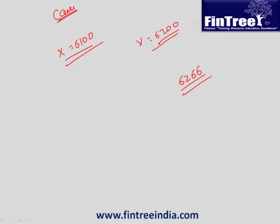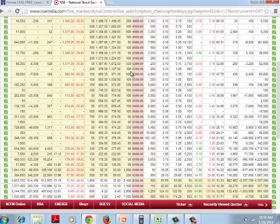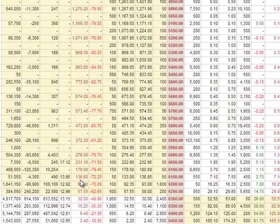You would choose the 6100 one because you have a right to buy at a cheaper price. In the case of a call option, the lower the strike price, the higher is going to be the premium. So we can observe that here for the 6200 strike, the premium is 92.